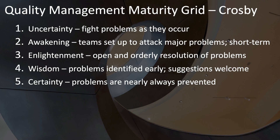The next level is wisdom, in which problems are identified early in their development, all functions in the organization are open to suggestion and improvement, and defect prevention becomes a routine part of the operation. The highest level of quality management maturity is when problems are prevented except in the most unusual of cases, and the organization understands why they don't have problems with quality.